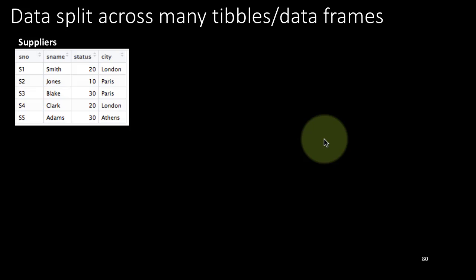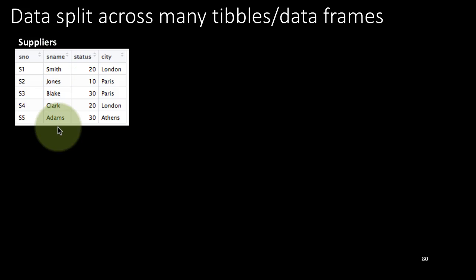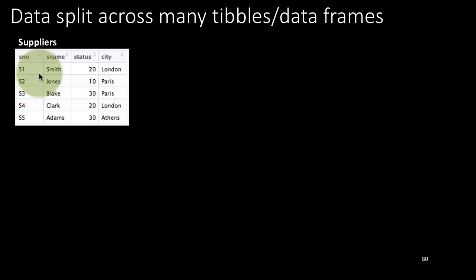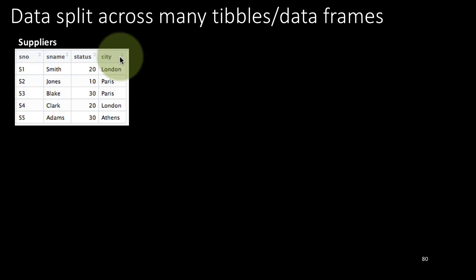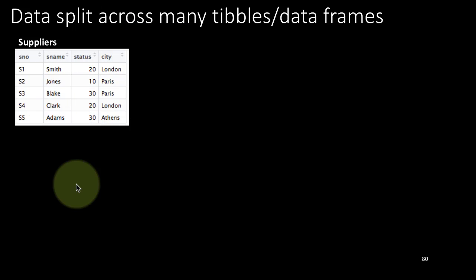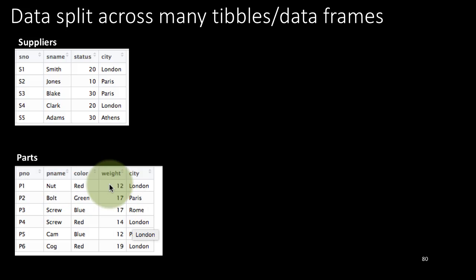Let's take an example. In a company scenario we've got many suppliers — five suppliers here: S1, S2, S3, S4, S5. Every supplier has a supplier number (SNO), supplier name (Sname), status of the supplier, and the city in which the supplier is located. For the most part we're not going to be looking at these columns, but they're there just to fill out the table.